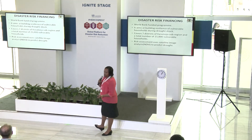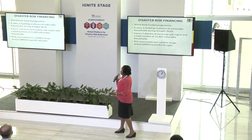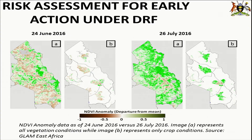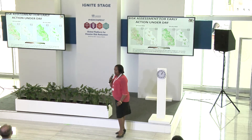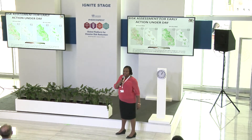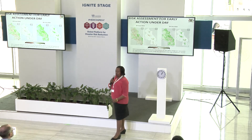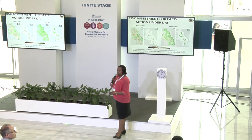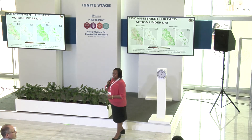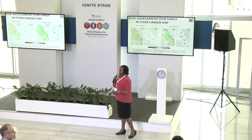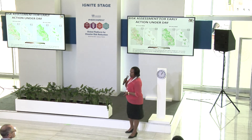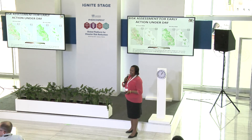How do we conduct the analysis to identify these households? We conduct analysis using satellite information — specifically NDVI, which is the Normalized Difference Vegetation Index. At national level, we have agreed that once the NDVI analysis shows negative 0.2, it means we have a drought. This analysis was based on historical rainfall performance data using SPI, the Standardized Precipitation Index.